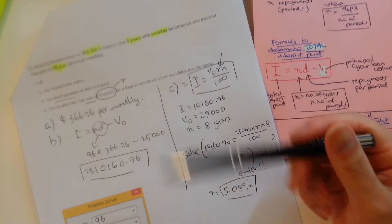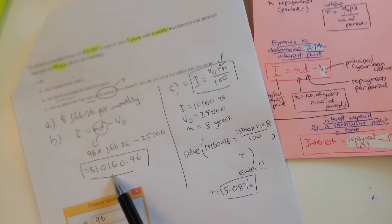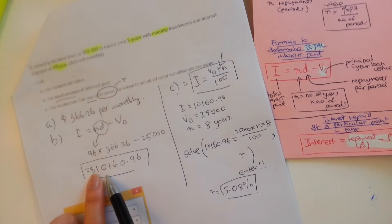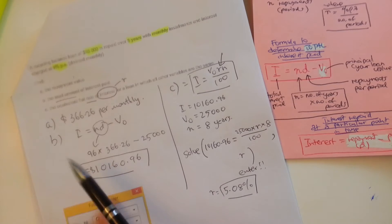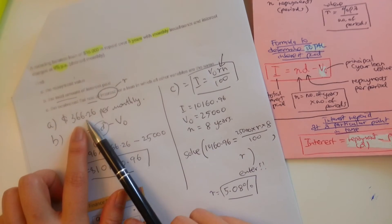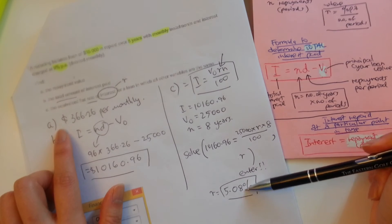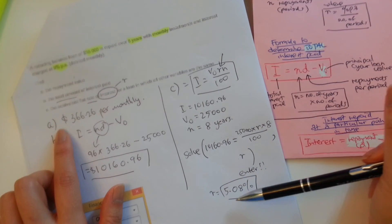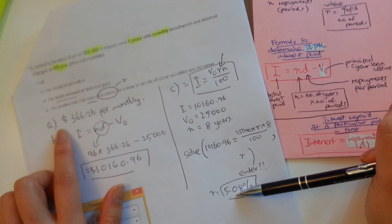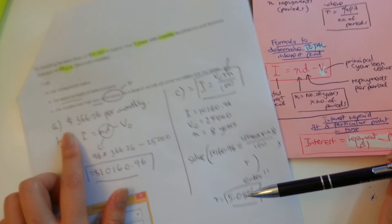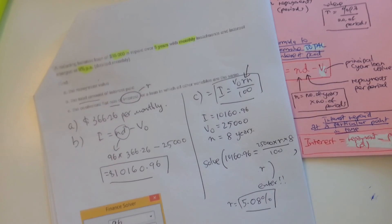You'd find that the R would come out as 5.08%, okay? Which means that if you were to take this loan out under flat rate, and if you want to pay this much interest and pay this much repayment every month, then the interest rate, in terms of simple interest, will be 5.08%. All right. All right.